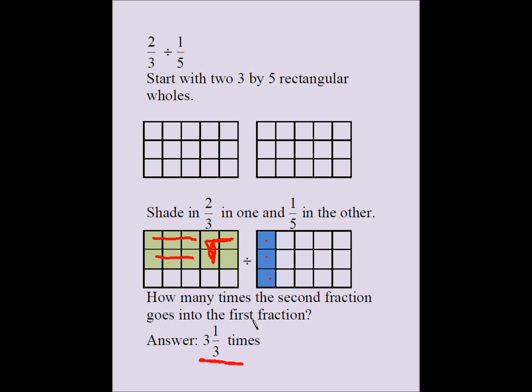This does not explain why the algorithm informally known as flip and multiply is valid, but it does provide a context and meaning to division of fractions. You can use algebra to explain why the division of fractions algorithm is valid, but this is about the meaning of division of fractions — how many times the divisor goes into the dividend. This is just the measurement interpretation of division of fractions. There is another one called partitive, which we didn't address here — we'll try to address it another time.